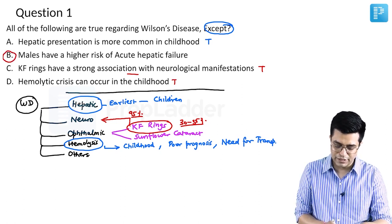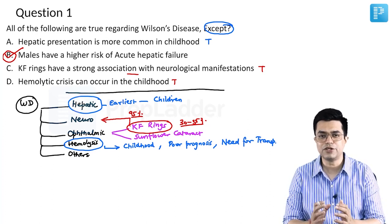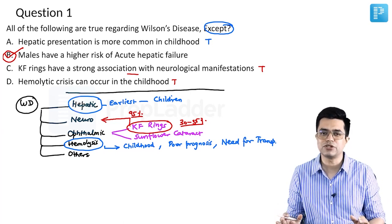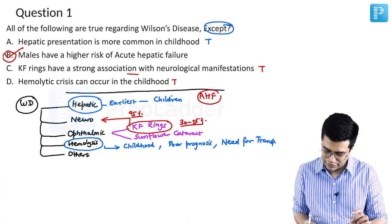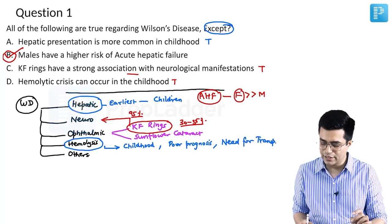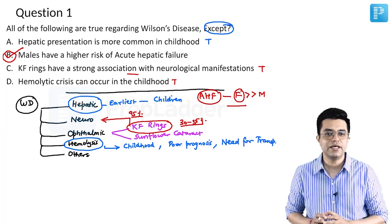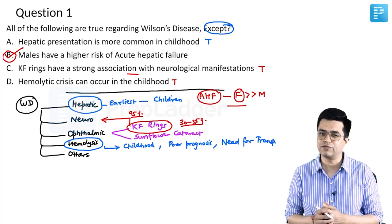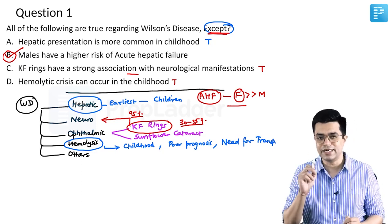By exclusion, the answer is option B, because the question asks for the false statement. When talking about hepatic manifestation, presentations range from progressive chronic liver failure causing cirrhosis, to acute fulminant hepatic failure, subtle transaminitis, or cholestatic picture. It has been found that patients presenting with acute or fulminant hepatic failure are significantly more females compared to males — a direct statement mentioned in both Nelson and Harrison, and previously asked in the AIIMS super speciality exam. So it is not males but females who have a higher risk.